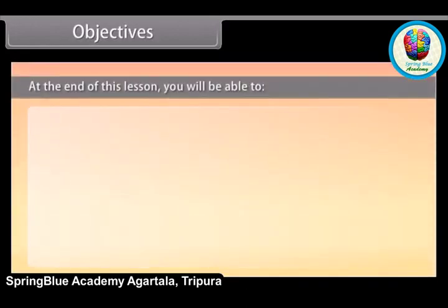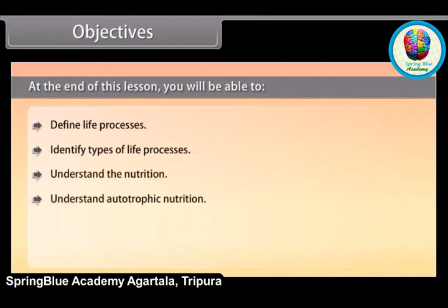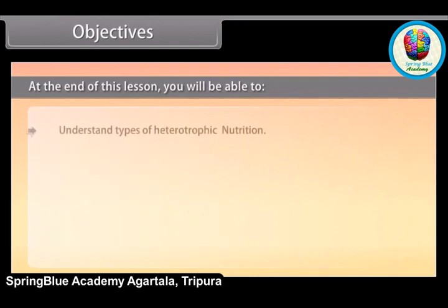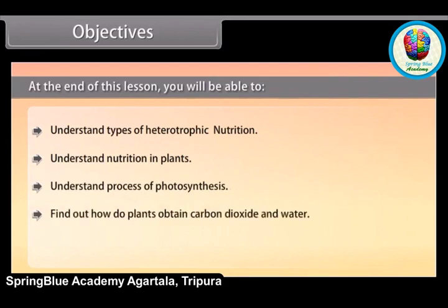At the end of this lesson you will be able to: define life processes, identify types of life processes, understand nutrition, understand autotrophic nutrition, understand heterotrophic nutrition, find the types of heterotrophic nutrition, understand nutrition in plants, understand the process of photosynthesis, find out how plants obtain carbon dioxide and water, and understand the significance of photosynthesis.